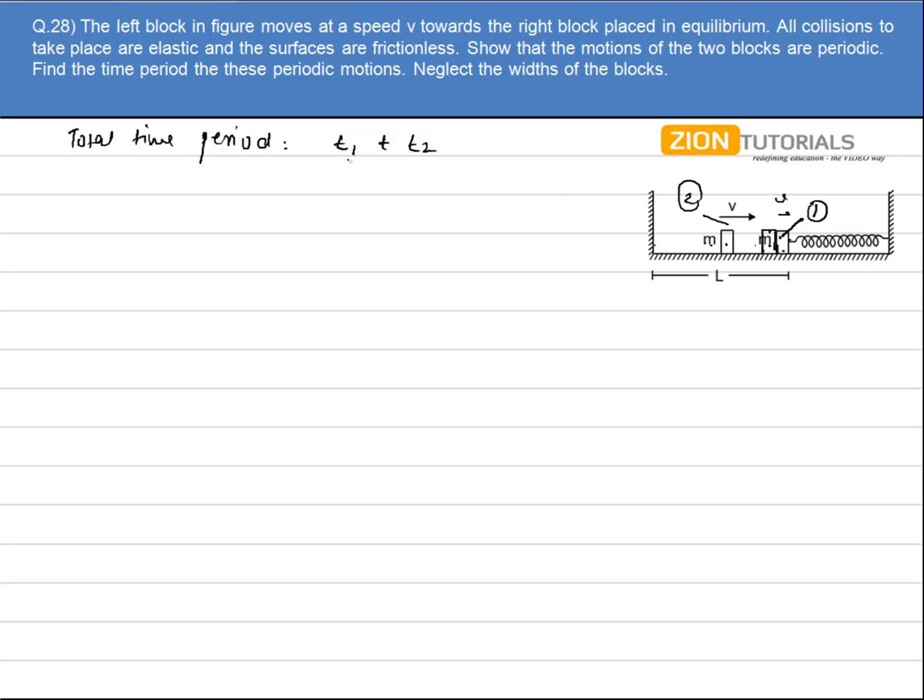Now what is happening is that block 1, let's say for block 1, the block 1 is performing simple harmonic motion with a velocity of, let's say, half of mv square. It will be completely changed to a spring energy half of kx square.